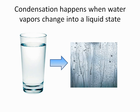Condensation allows each stage of the water cycle to function. Without it, precipitation would not occur, which means a lack of rain to crops and evaporation would not occur as well.